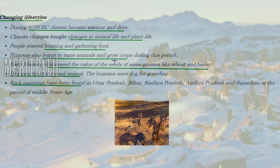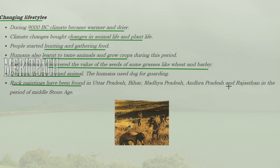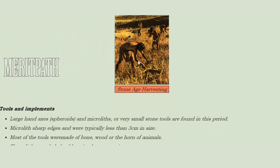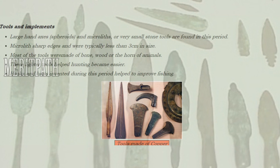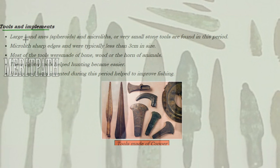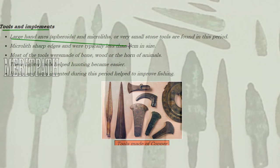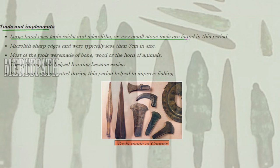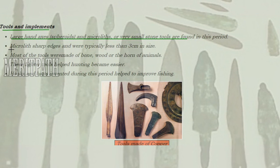During the Mesolithic Age, people started hunting and gathering food to preserve it for future use. They learned to tame animals and grow crops, so agriculture began. They understood the value of seeds and some grasses like wheat and barley. Rock paintings from this period are found in Uttar Pradesh, Bihar, Madhya Pradesh, Andhra Pradesh, and Rajasthan. Tools included large axes known as spiroids, microliths, and very small stone tools only three centimeters in size. Tools were also made from bones, wood, or horns of animals, making hunting easier.